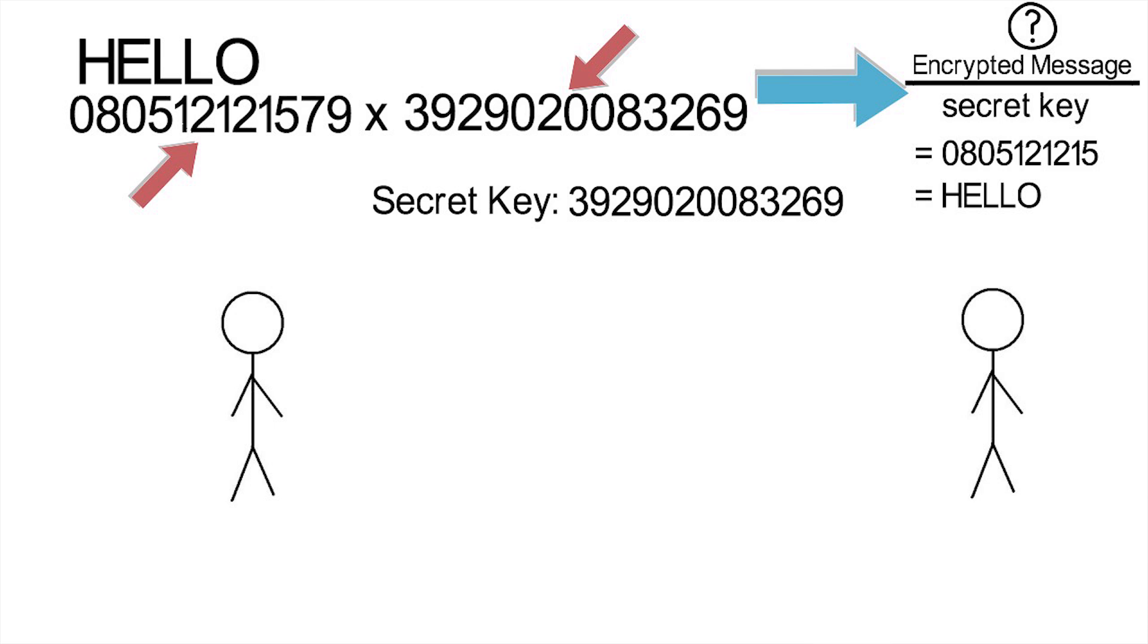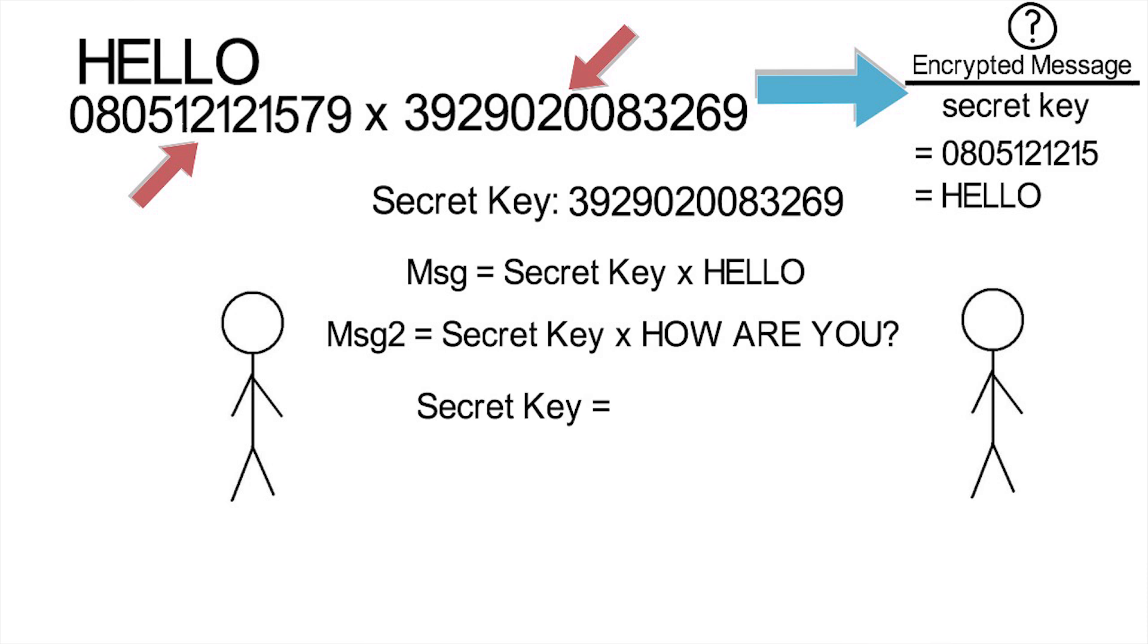Unfortunately, there's a huge flaw with this. If someone intercepts your message, which is your secret key times your actual message, then they intercept another message, which would be your secret key times another actual message, they could easily find your secret key, because it would be the greatest common factor of the two numbers they intercepted. And there are ways to determine this very efficiently.